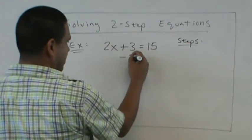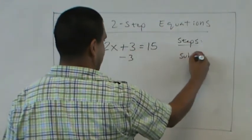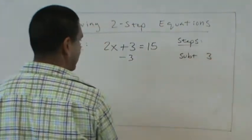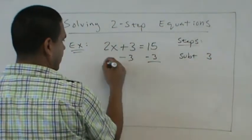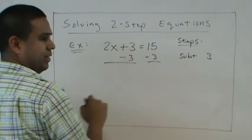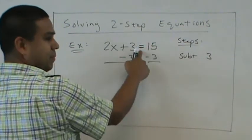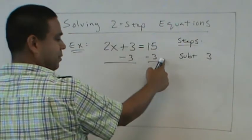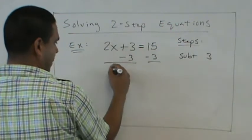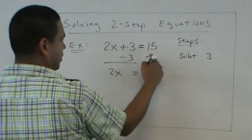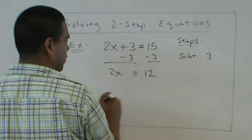So the first step is subtract 3. And we're going to subtract 3 on both sides of the equation. It has to be equal, right? So keep it equal. If I subtract 3 on this side, I have to subtract 3 on that side. So that leaves us with 2x equals 12.